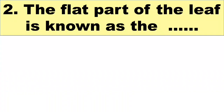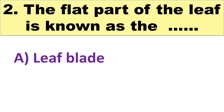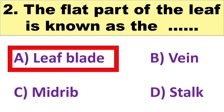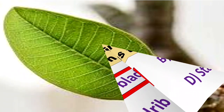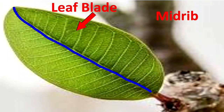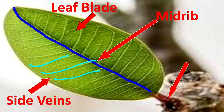The next question is: the flat part of the leaf is known as blank. Your options are A. Leaf blade, B. Vein, C. Mid rib, and D. Stom. The right answer is A. Leaf blade. See in this picture — the flat and broad part of the leaf is the leaf blade. The line running in the center is known as the mid rib or main vein, and this is the stalk which joins the leaf to the stem.